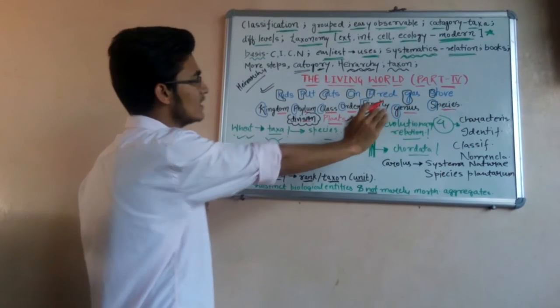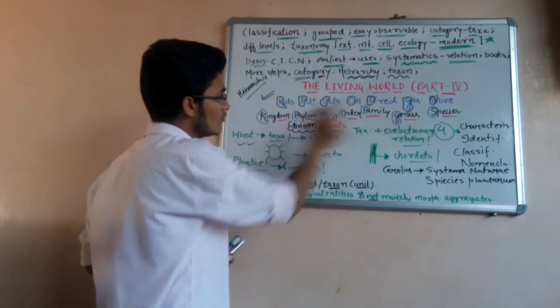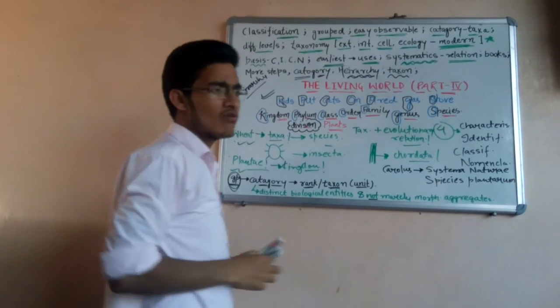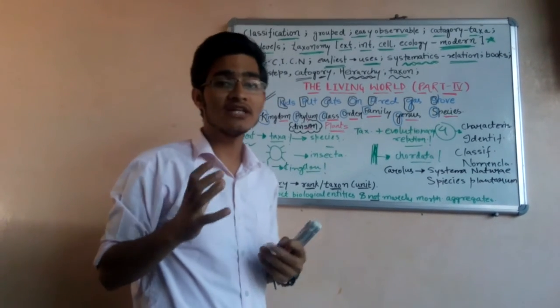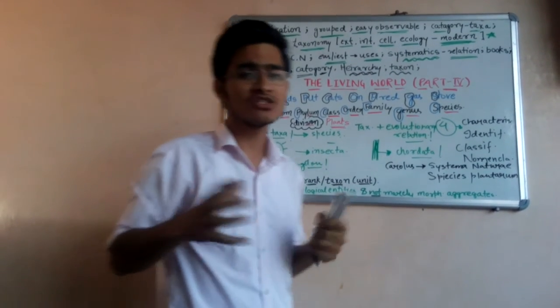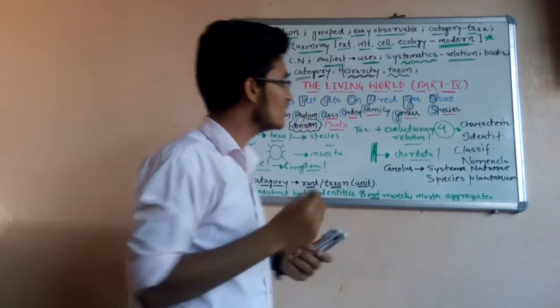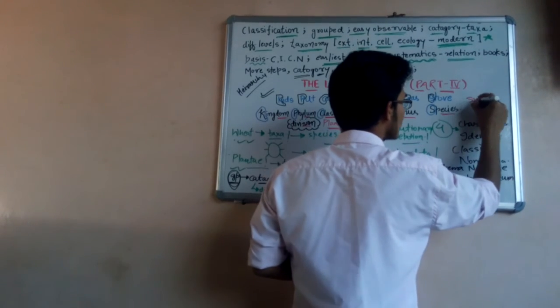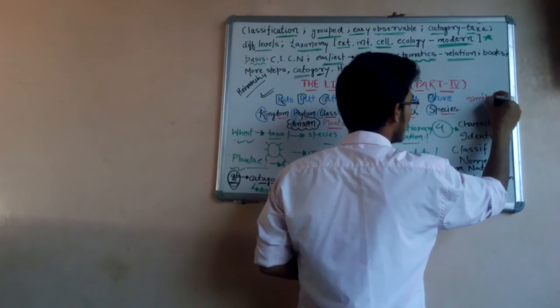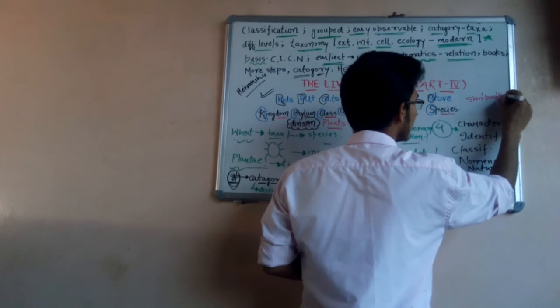Now when we talk about the similarities, we know that the organisms in a particular species are very similar to each other. As we go from kingdom to species, the similarities increase.